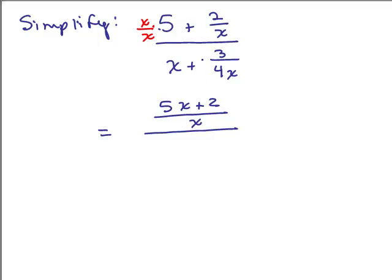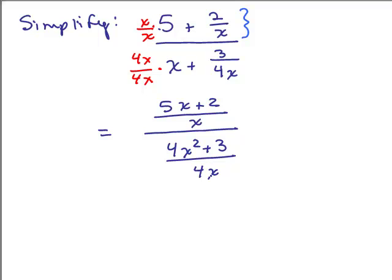Now for the denominator: the common denominator is 4x because that's the only denominator present. Think of x as x/1, and multiply by 4x/4x. That gives 4x² in the numerator and 3 stays as 3, so the denominator becomes (4x² + 3) / 4x. Now we've written both the numerator and denominator of the complex fraction as single fractions.